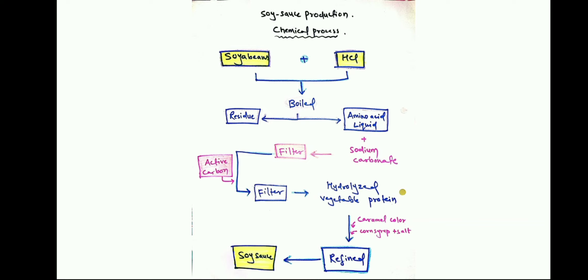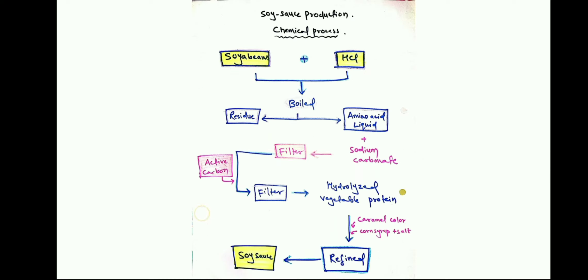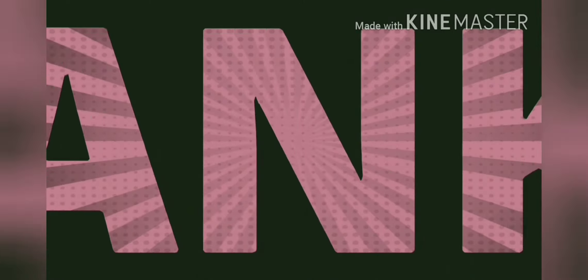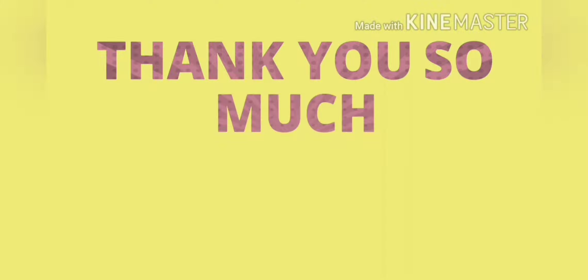Soy sauce produced by the chemical method — acid hydrolysis — is harsher and does not have as desirable a taste as soy sauce produced by the traditional brewing method. That covers soy sauce production by both the traditional conventional method and the chemical process. I hope this was helpful. If it was, please press the like button and subscribe to my channel for more interesting topics. Thank you so much.